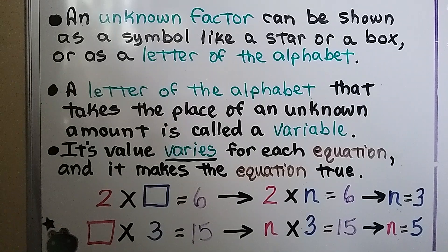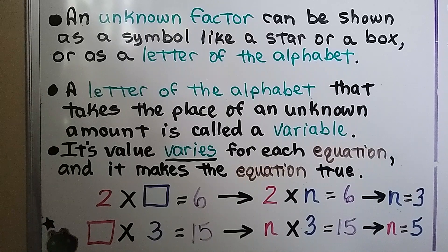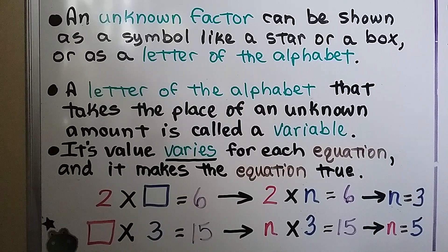An unknown factor can be shown as a symbol, like a star or a box, or as a letter of the alphabet. A letter of the alphabet that takes the place of an unknown amount is called a variable. Its value varies for each equation, and it makes the equation true.